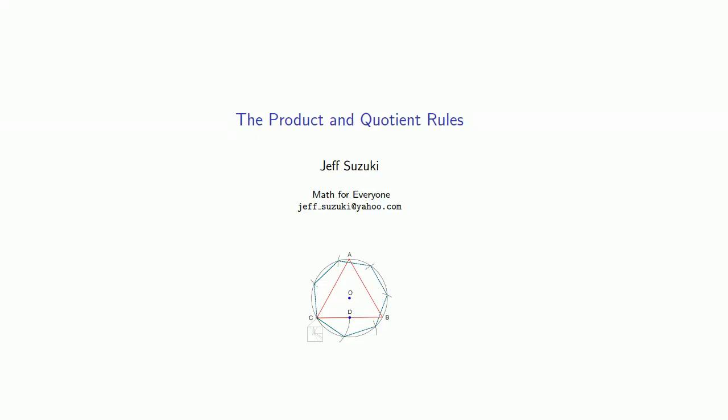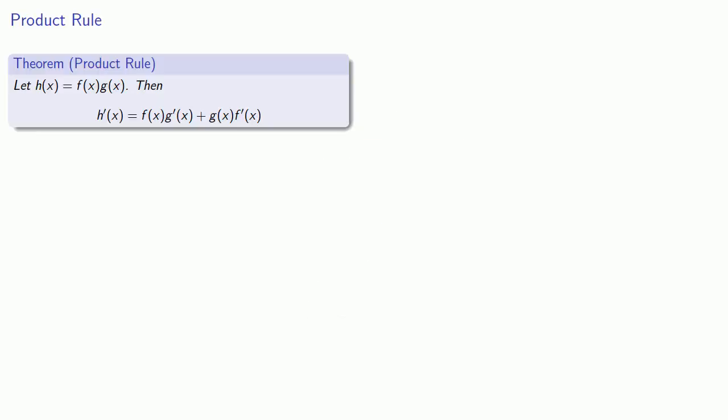We can do many derivatives by using basic rules of algebra and a couple of simple derivative rules. If we know a few more derivative rules, we'll be able to handle a lot more derivatives. So we'll introduce the product and quotient rule. Suppose we have a function that is a product of two other things, f of x and g of x. Then the derivative is going to be the first function times the derivative of the second, plus the second function times the derivative of the first.